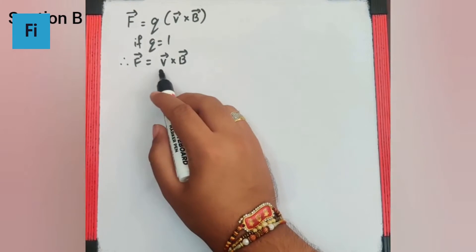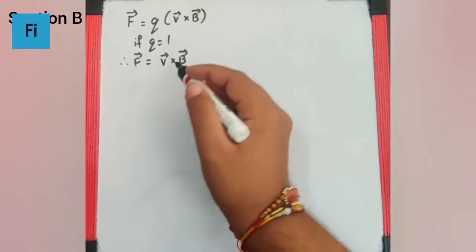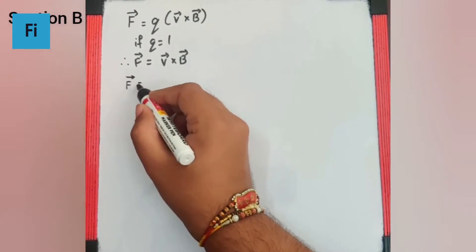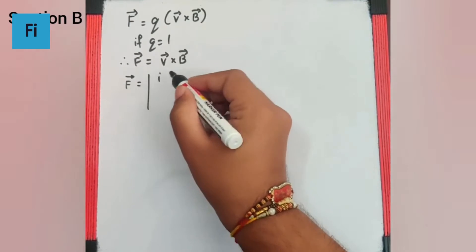Now kyunki hamain F bar aur v bar diya hai and B bar poochha hai, we have to go for trial and error. So if we go with the first option, I can say F bar is i j k, v bar is 2i cap 4j cap 6k cap...